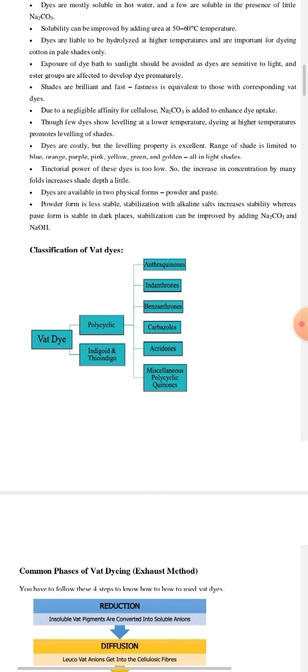Now, we will look at the classification of dyes. Vat dyes can be classified into polycyclic or indigoid and thioindigo. Polycyclic is further classified into anthraquinones, indenthrones, benzenthrones, carbazoles, acridones and miscellaneous polycyclic quinones.